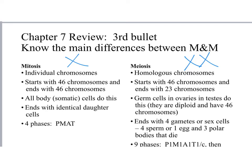In mitosis there are four phases: prophase, metaphase, anaphase, and telophase. In meiosis there are eight phases across two divisions: prophase 1, metaphase 1, anaphase 1, telophase 1, then prophase 2, metaphase 2, anaphase 2, telophase 2. Remember, there is a cytokinesis in both divisions.